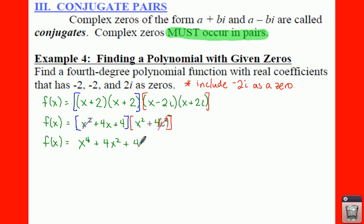So that gives us a 4x to the 3rd. 4x times 4 gives us a 16x. We're done with the 4x. And then we take 4 times x squared gives us 4x squared. And 4 times 4 is 16.